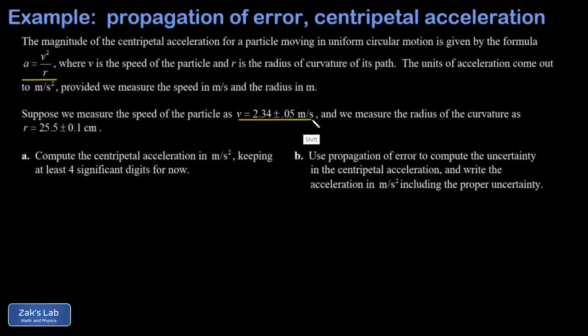We're told that we measure the speed as 2.34 plus or minus 0.05 meters per second and the radius of curvature as 25.5 plus or minus 0.1 centimeters.